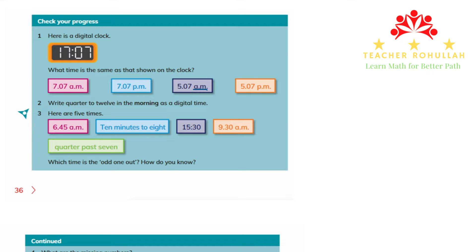In question two, it says: write quarter to 12 in the morning as a digital clock. Quarter to 12 — what does it mean by quarter? To show quarter, I will draw an analog clock here.